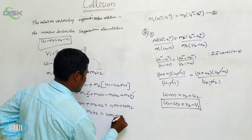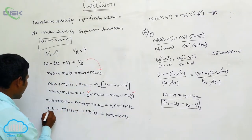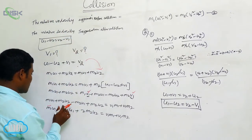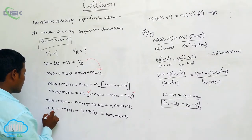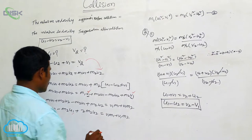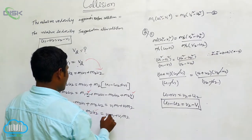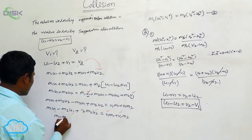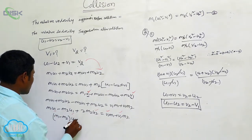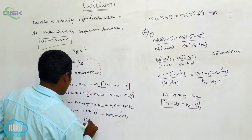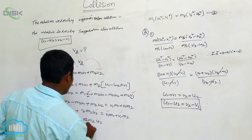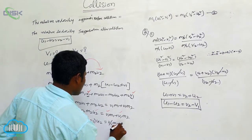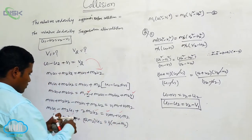So we have V1 times (M1 plus M2) on one side. Taking common factors on the left: we get (M1 minus M2) U1 plus 2 M2 U2. This is equal to V1 times (M1 plus M2). This is the equation from which we need the value of V1.